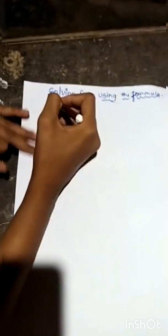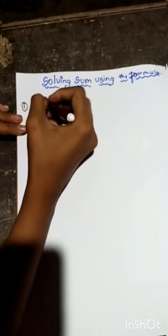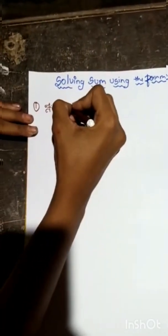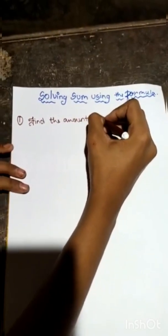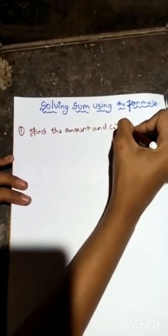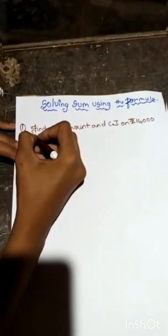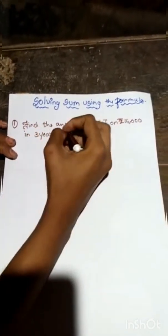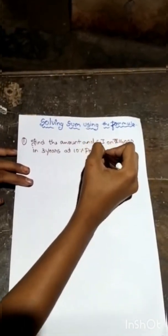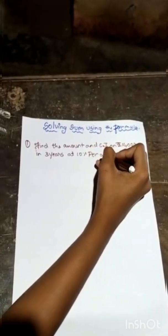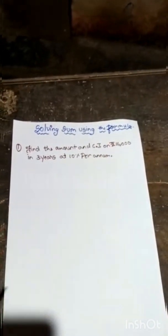Solving the sum using the formula of compounded yearly. The question: find the amount and compound interest on rupees 16,000 in three years at 10% per annum. Here, annum means a year, so you just think of it as year.